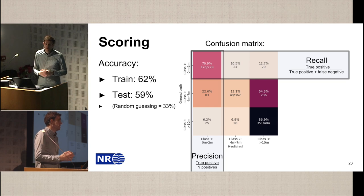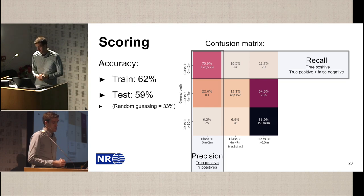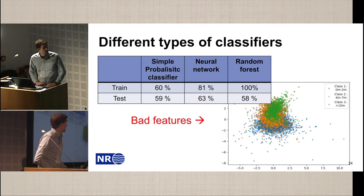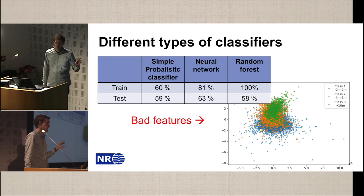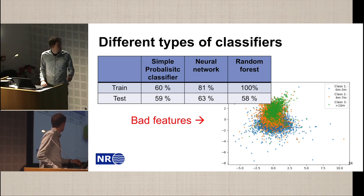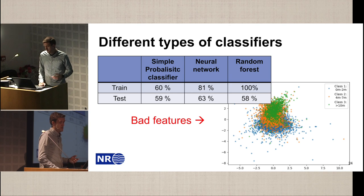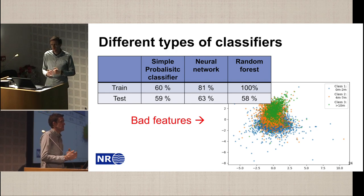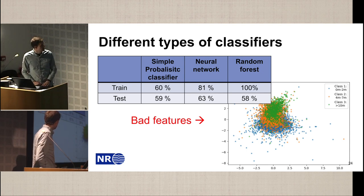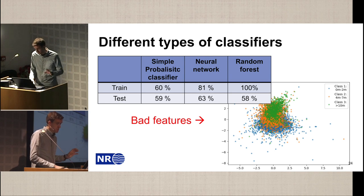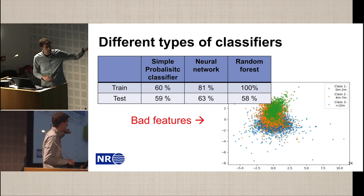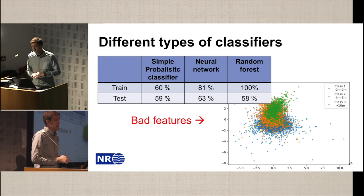We can try different types of classifiers: the simple probabilistic classifier, neural network, and random forest. The more modern ones perform better on the training set, but on the test set they perform about the same. The main problem here is that we have bad features — the features don't separate, so no matter how you try to divide the clusters, you will always make a lot of mistakes.